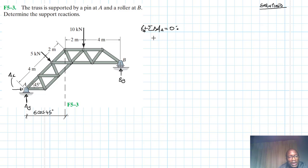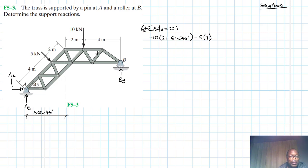Summation of moments about point A: we have a negative moment of 10 times the moment arm, which is 2 plus 6 cos 45. Then another negative moment from the 5 kN force: 5 times 4, since it's perpendicular. Then plus BY times (6 plus 6 cos 45) equal to zero.